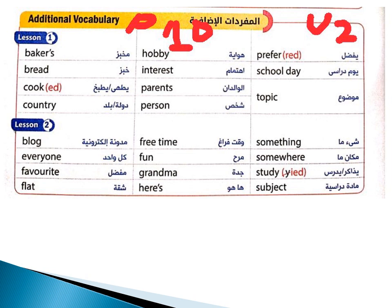كوك - يطهي يعني بيطبخ. كونتري - دولة أو بلد، لو ضفنا لها T-Y-S-I-D-E تبقى الريف. هوبي - هواية. انترست - اهتمام. بيرانتز - الوالدان.